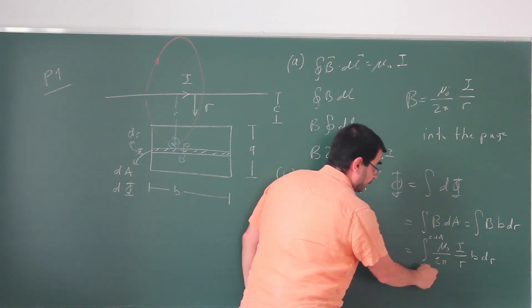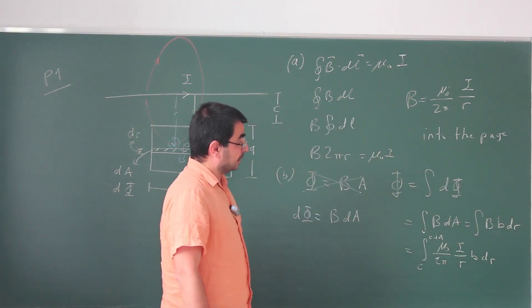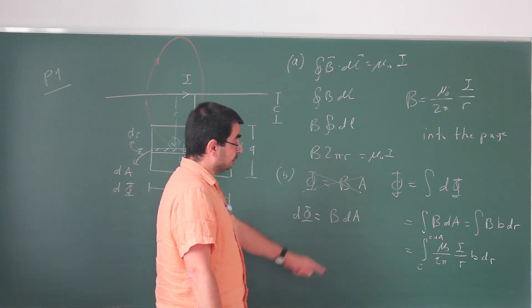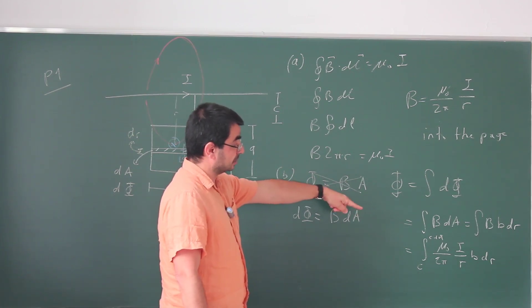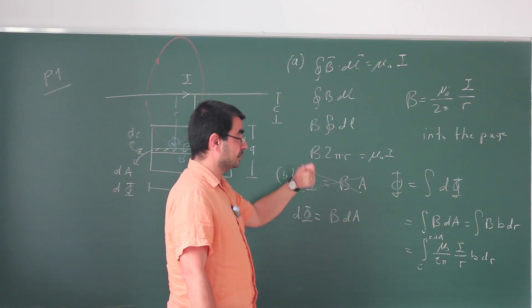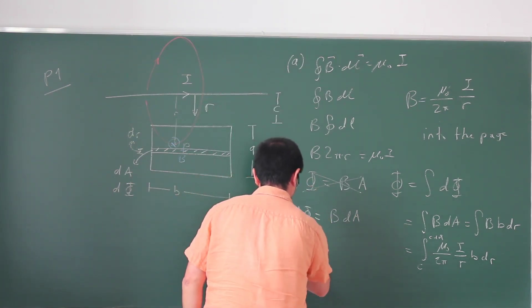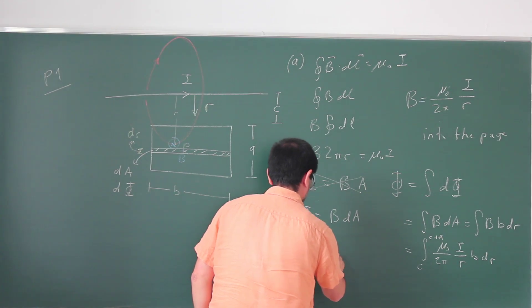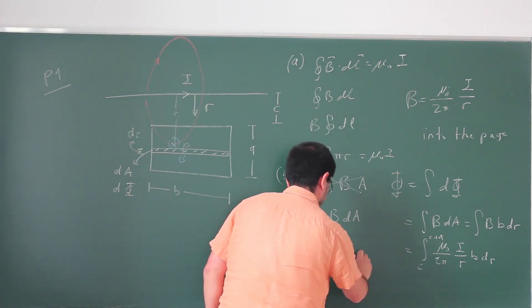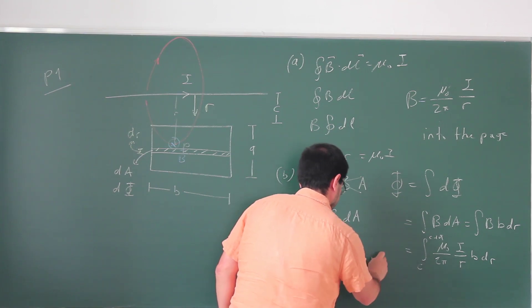This mu naught I B over 2 pi, they are all constants, then it becomes a logarithm. Because of the limits this becomes a difference of logarithms. Difference of logarithms is the logarithm of the ratios, so my phi in the end is going to be mu naught times I B over 2 pi logarithm (c plus a) over c.